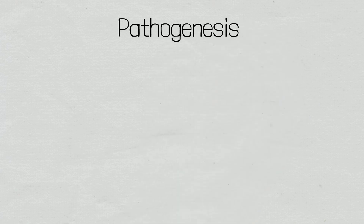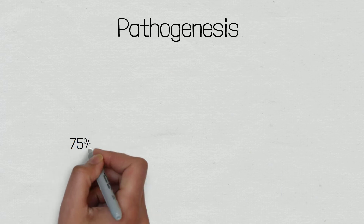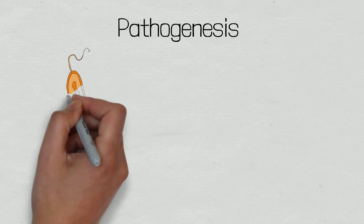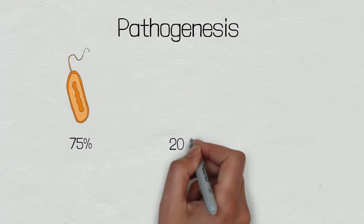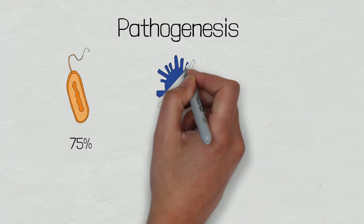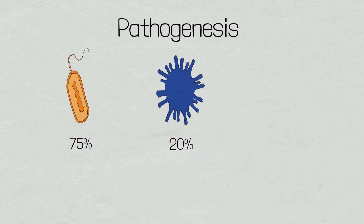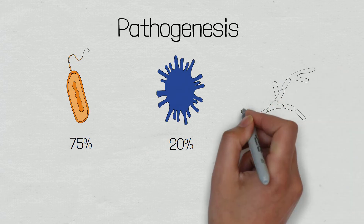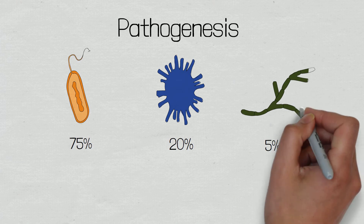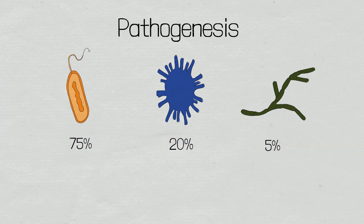It is important to understand that many different types of pathogens can cause infection, and each pathogen will have its own mechanism of action when it comes to causing an inflammatory response. Approximately 75% of pneumonia cases are caused by bacteria, 20% of cases are viral, and approximately 5% are atypical such as fungal. Often viral pneumonia can lead to bacterial pneumonia, as the virus damages pulmonary cells and defence mechanisms, allowing bacteria to more easily invade and colonise.